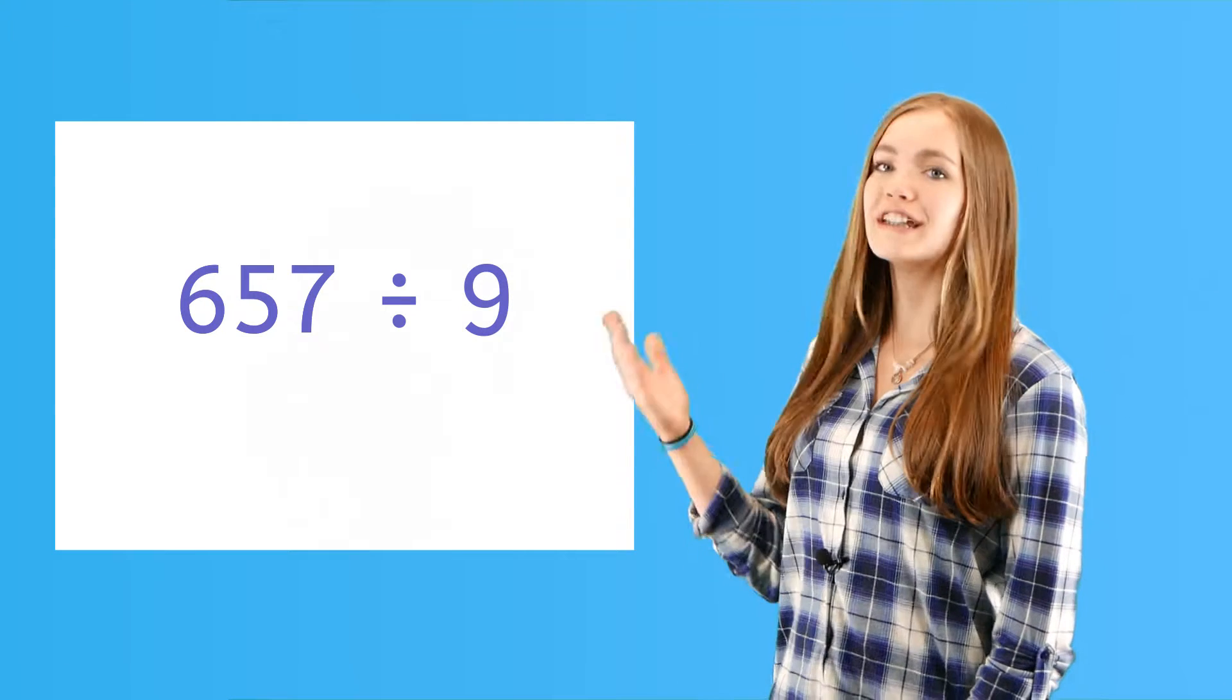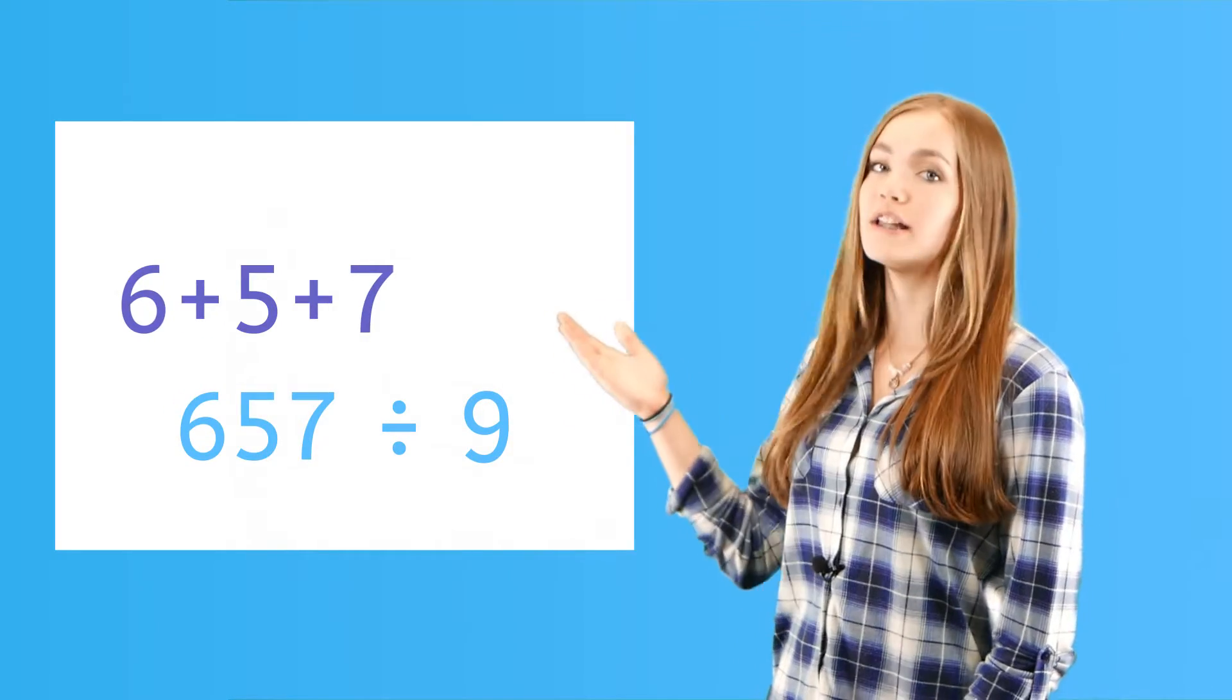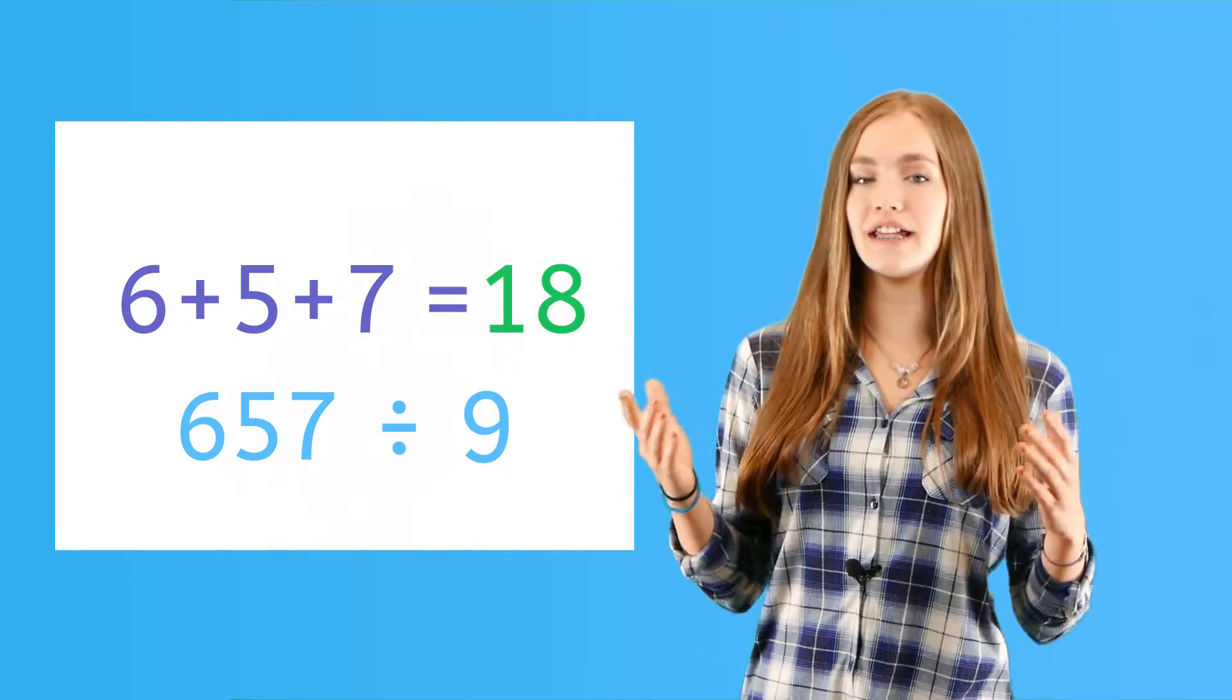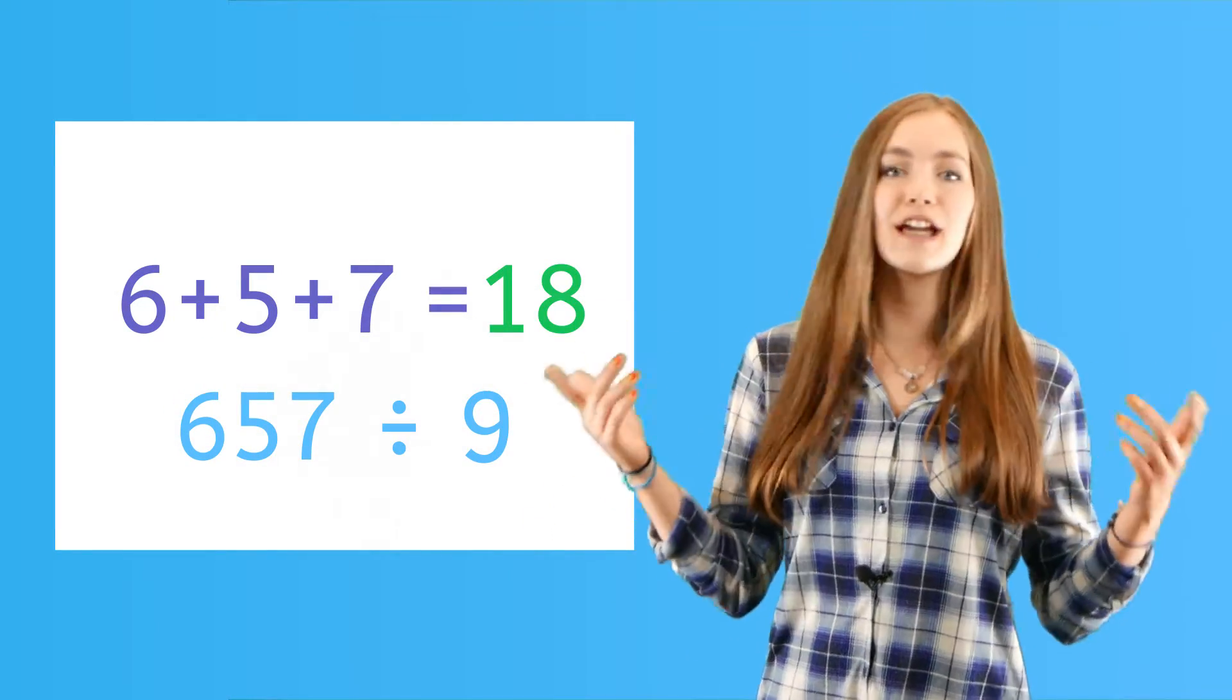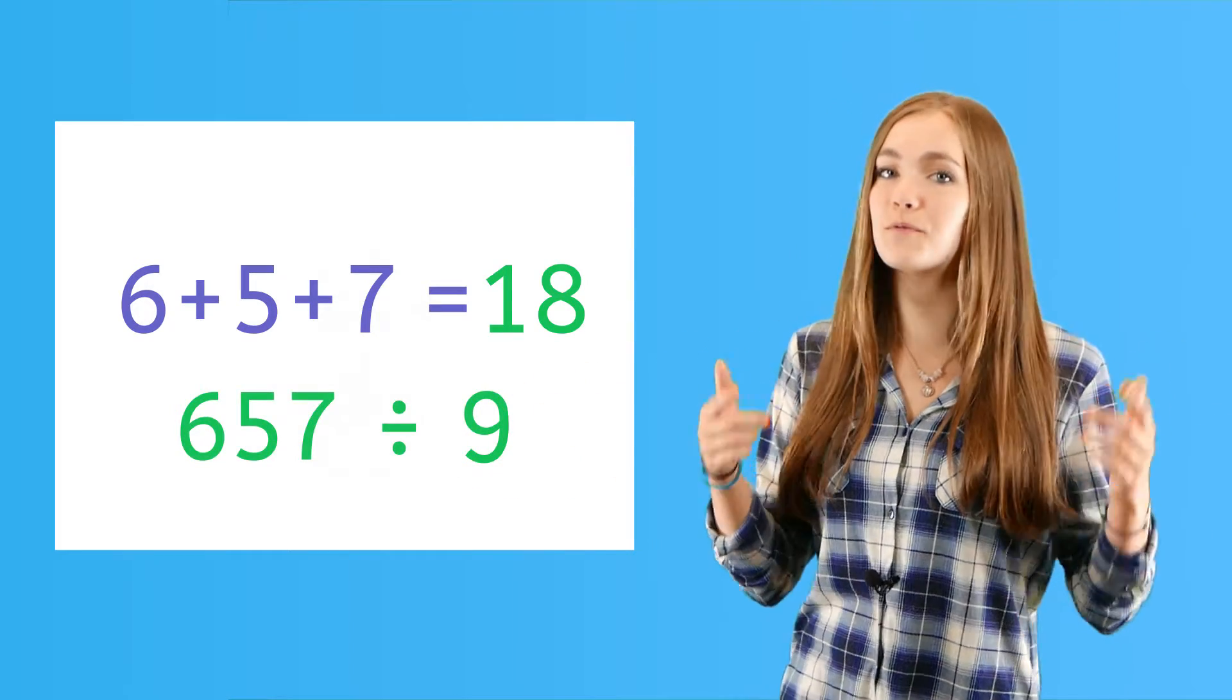The rule for the digit 9 is the same as the rule for 3, except the sum of the digits must be divisible by 9, not 3. Let's look at some examples. We have 657. 6 plus 5 plus 7 is 18, which is the same as 2 times 9. So this one works.